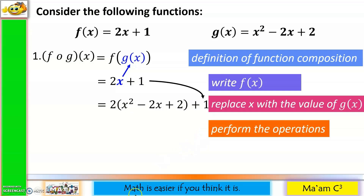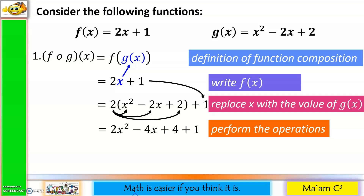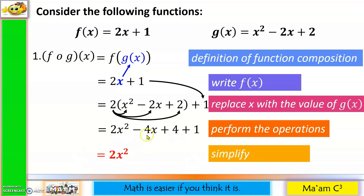Now perform the operations. 2 times x squared equals 2x squared. 2 times negative 2x equals negative 4x. 2 times 2 equals 4, plus 1. Then we simplify: this will remain 2x squared minus 4x. 4 plus 1 is 5. So this is our answer for f∘g(x).